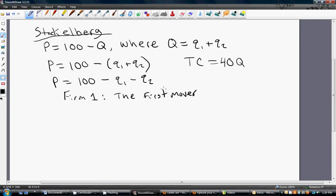And then sets its corresponding output level. So when firm 1 is deciding on how much to produce, it needs to consider how firm 2 will respond to its output level. The way that firm 1 is going to incorporate that information is to consider firm 2's reaction function.